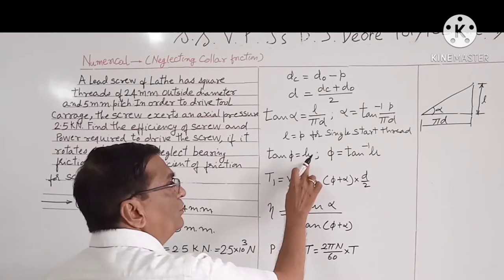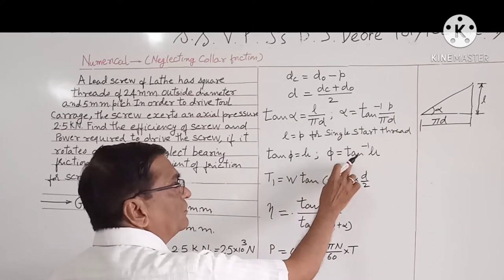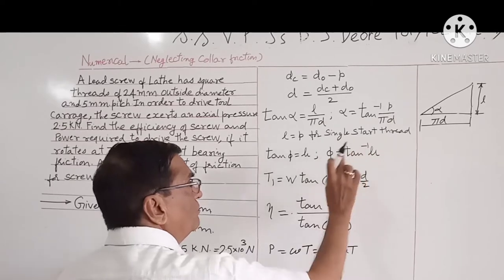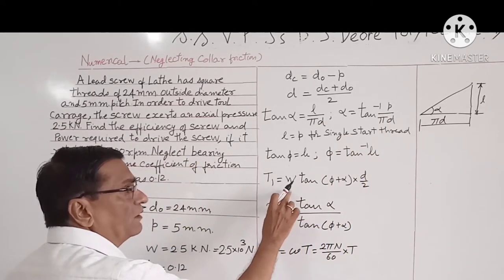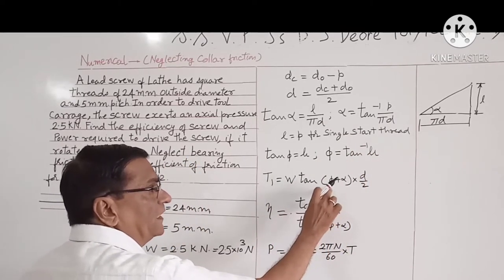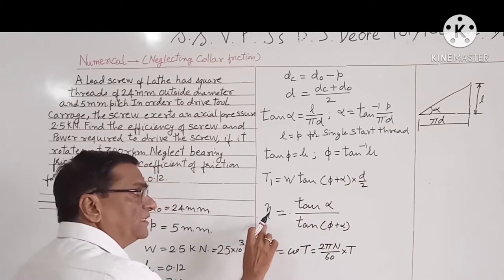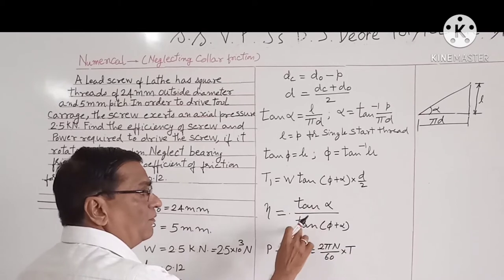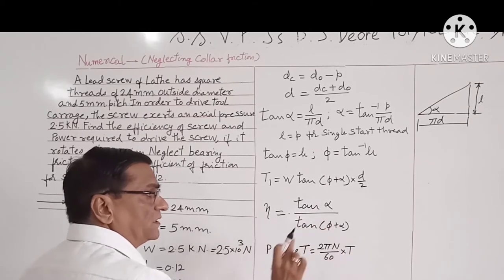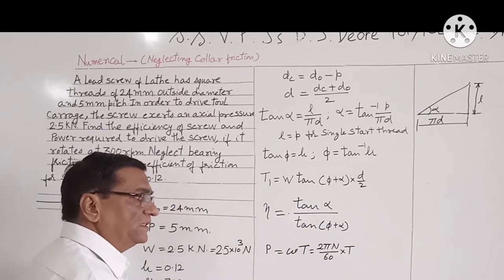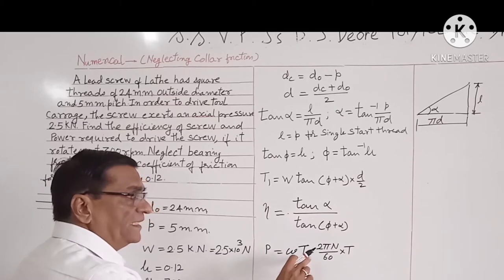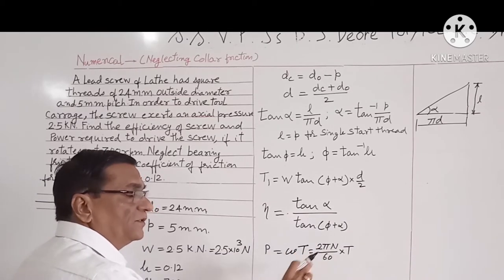Tan phi is equal to mu, or phi is equal to tan inverse mu. T1 is equal to W tan (phi plus alpha) multiplied by D by 2. And efficiency is given by tan alpha upon tan (phi plus alpha). And power is given by omega T, that is 2 pi N upon 60 into T.